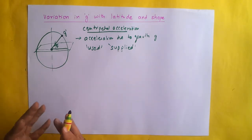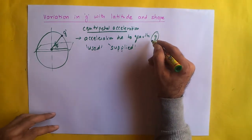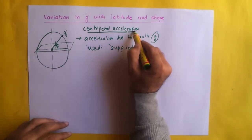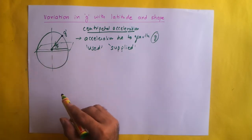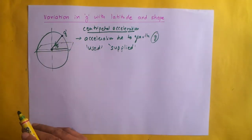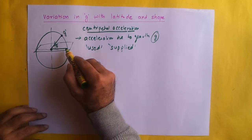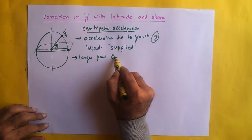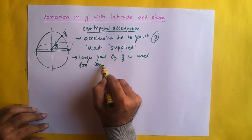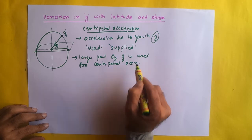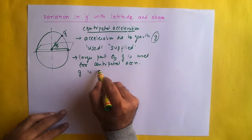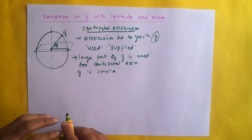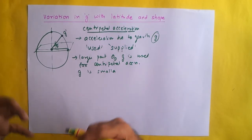We have a theoretical value of g, but part of it is getting used for centripetal acceleration because of the earth's rotation, and therefore the actual value which we see is g dash which is different from g. What is observed is that on the equator, a larger part of g is used for centripetal acceleration. Therefore the value of g is smaller.